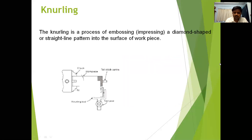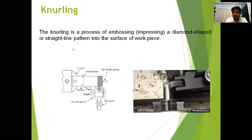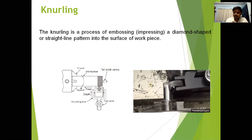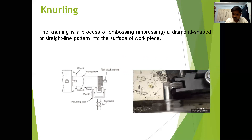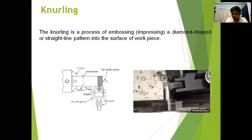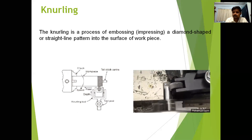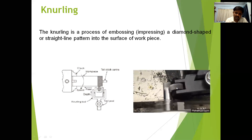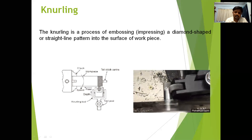Next one is knurling. Knurling is the process of embossing a diamond-shaped or straight-line pattern into the surface of the workpiece. This is the knurling bit, and you can impress whatever shape you require on the external surface of the workpiece. The pattern produced depends upon the knurling tool. You can impress any pattern on the given workpiece.